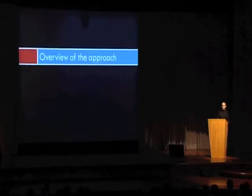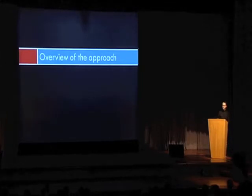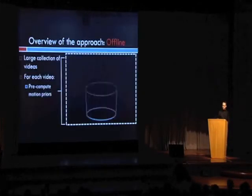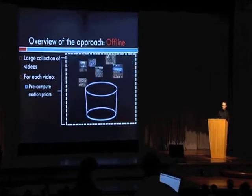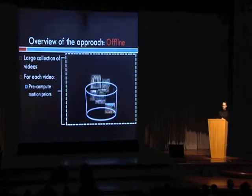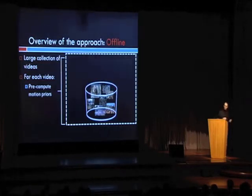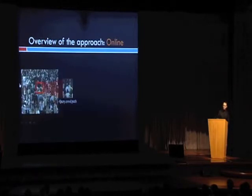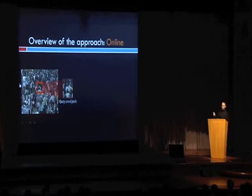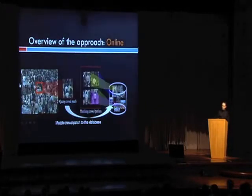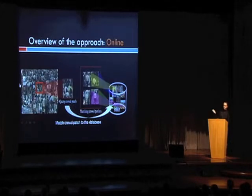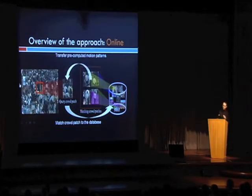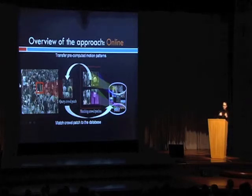I'll begin by giving a brief overview of the various components of our approach, and then give additional details in the subsequent slides. We begin by collecting a large number of videos and use them to learn motion priors by performing long-term analysis in an offline manner. We can then use these motion priors to drive a tracking algorithm. During testing, we obtain a crowd patch around the person we're interested in tracking, and match this crowd patch to a database to obtain a set of matching crowd patches. We can then transfer the pre-computed motion priors associated with those matching patches to assist in improving tracking.